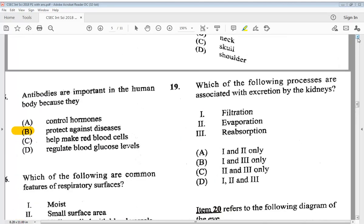Let's move to number 19. Which of the following processes are associated with excretion by the kidneys? 1. Filtration. 2. Evaporation. 3. Reabsorption. So our answer options A, 1 and 2 only. B, 1 and 3 only. C, 2 and 3 only. Or D, 1, 2 and 3. So we know the answer is B, 1 and 3 only.